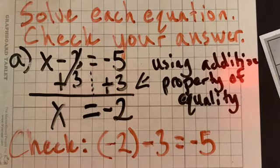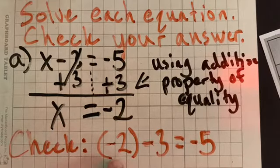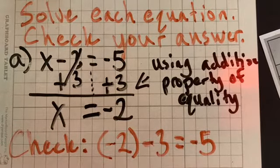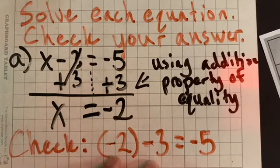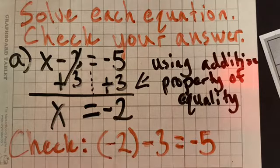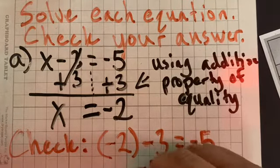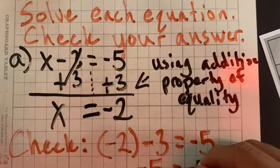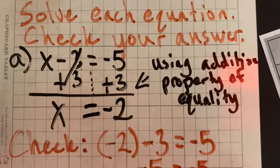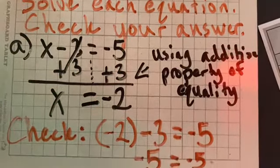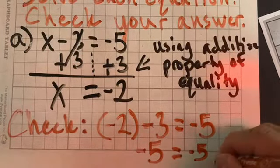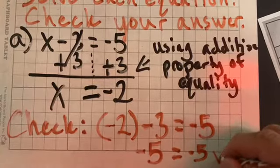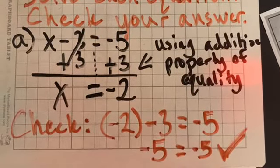So down here when I'm checking the work, I'm going to replace X. And again, because I'm replacing the variable with the number, I'm putting it in parentheses. Negative 2 minus 3 equals negative 5. Now, take the time. Is negative 2 minus 3 equal to negative 5? If you start at negative 2, you've got to go to the left, 3 units. If you're looking at a number line, that number is going to be negative 5. So negative 5 does equal negative 5.